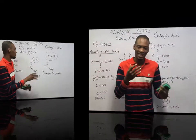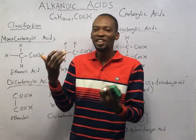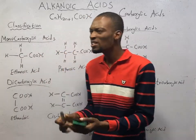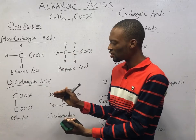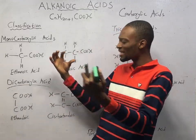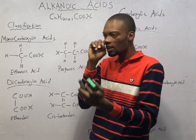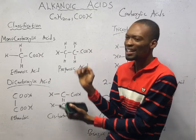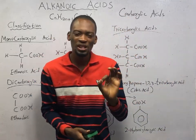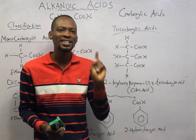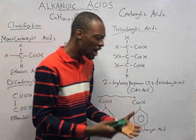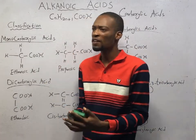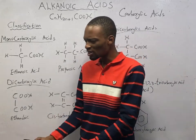Just like hydrocarbons, an alkanoic acid can be aliphatic or aromatic. Aliphatic means having straight or branched chains, while aromatic involves possessing the benzene structure. The benzene structure is a resonance hybrid, and August Kekulé proposed that structure, around 1865. Aliphatic alkanoic acids can also be classified based on the number of carboxyl groups present, just like alkanols.